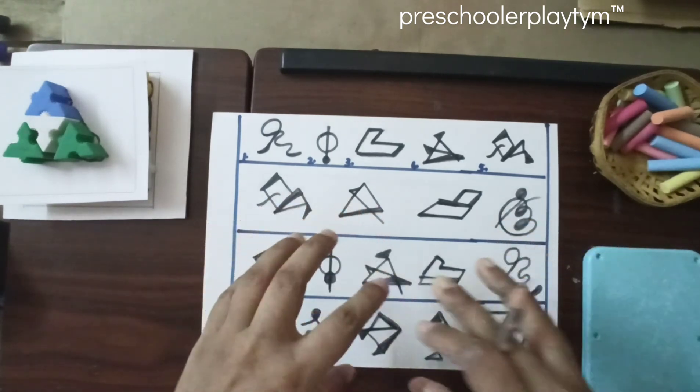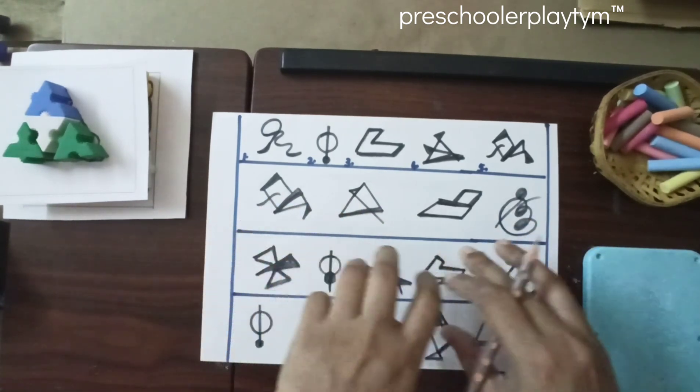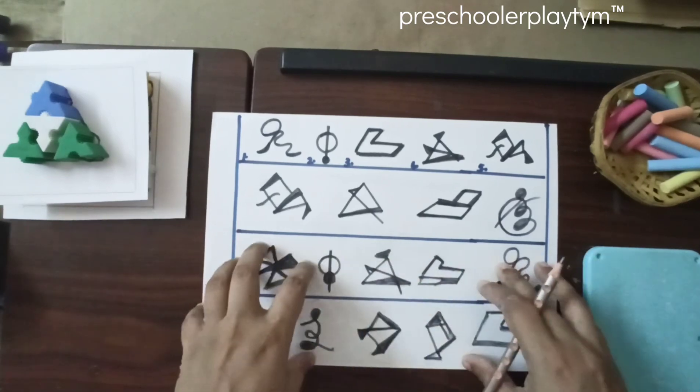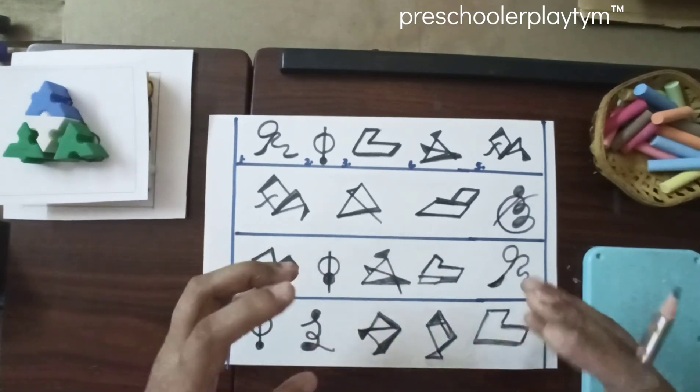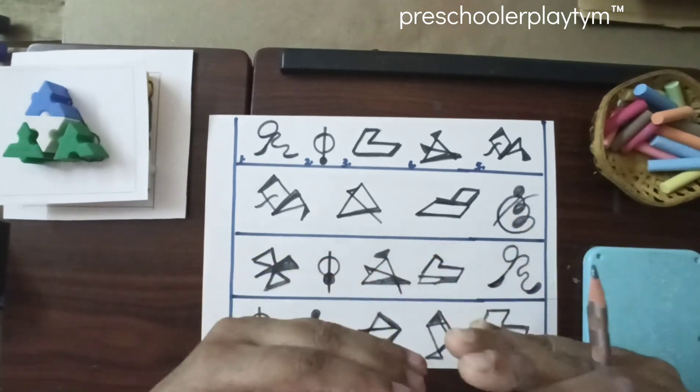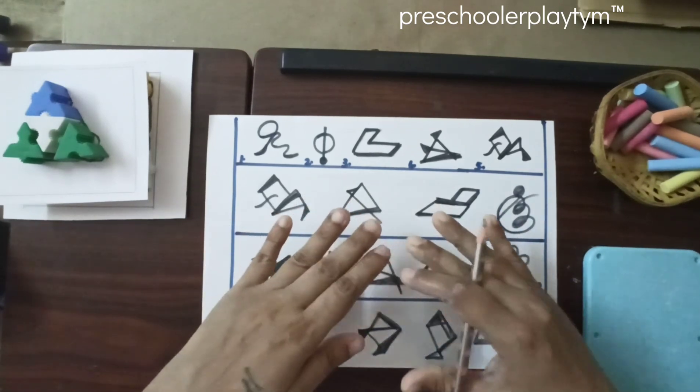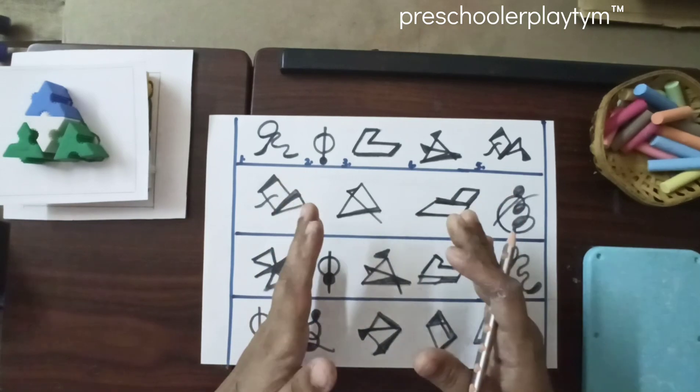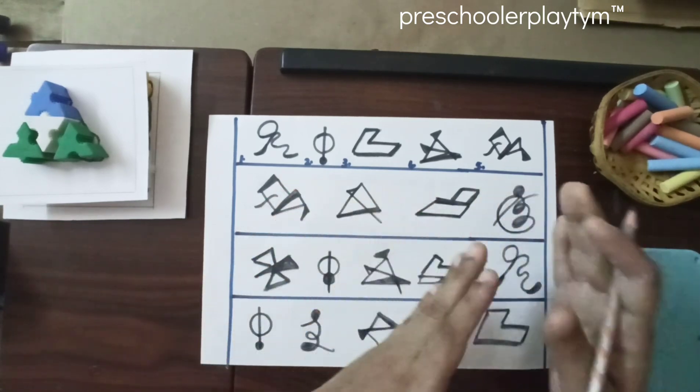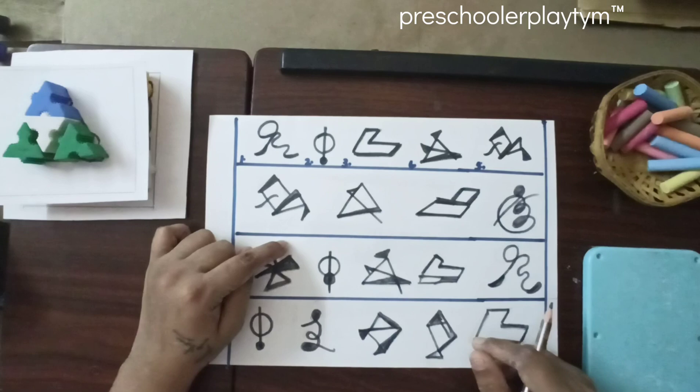One is one level up. So, if yesterday, like some of the moms sent me an inbox, if I'm not able to do the previous one, please make them first try that. You create your own patterns. Make them practice that. Once they have an idea that what are you trying to put across, they will be able to do these sheets.